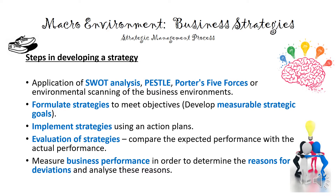We need to measure the business performance in order to determine the reasons for deviations. Once we have evaluated our strategy, we need to see if there is a deviation — for example, if we wanted a 10% improvement in sales and we only have a 2% improvement, we need to analyze why we are not meeting our goal. Sometimes if we can identify the reason for this deviation, we can actually fix it. If we don't know what the problem is, we are not going to be able to fix it.